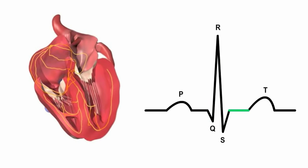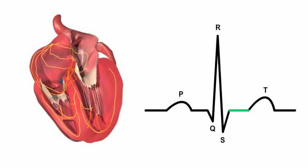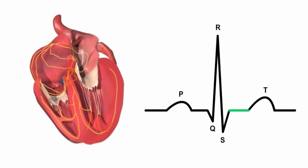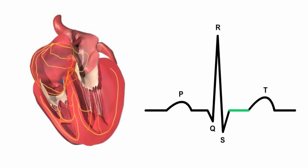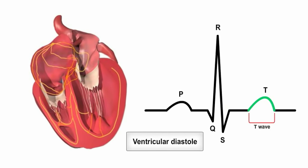Finally, as the signal passes out of the ventricles, the ventricular walls start to relax and recover, a state described as ventricular diastole. The dome-shaped T wave on the ECG marks this ventricular repolarization.